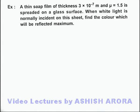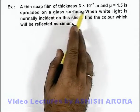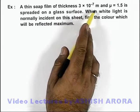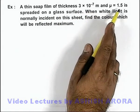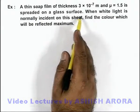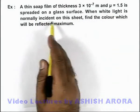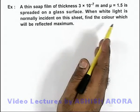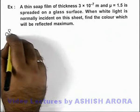In this example, we are given that a thin soap film of thickness 3×10⁻⁷ meters and refractive index μ = 1.5 is spread on a glass surface. When white light is normally incident on this sheet, we are required to find the color which will be reflected maximum.